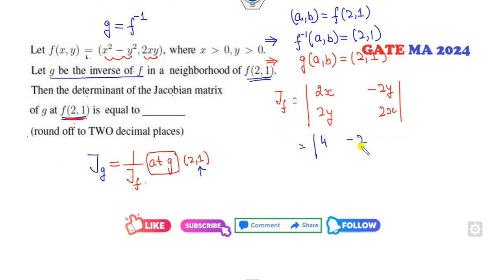This value will be 4, minus 2, 2, and 4. So it is 16 plus 4, that is 20. So what is the right answer? 1 over 20, that is 0.05 is the right answer of this problem.